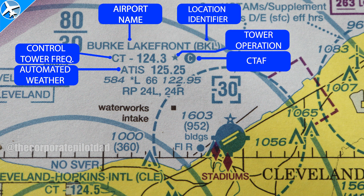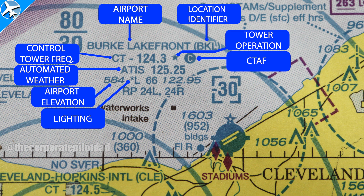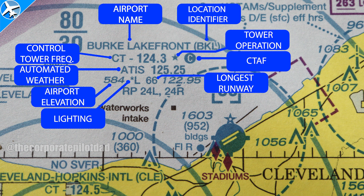ATIS provides wind information, landing runway, departing runway, and any possible taxiway closures, as well as other important airport information. The elevation of this airport is 584 feet above sea level. Runway lighting is denoted by the L, meaning lighting is in effect from sunset to sunrise. The asterisk means part-time operation, and the chart supplement has more information on lighting limitations. The 66 tells us the longest runway in hundreds of feet — so 6,600 feet — though actual landing distance available may vary; the chart supplement has those details.